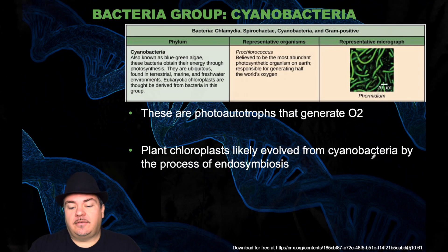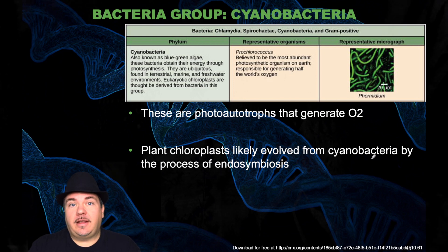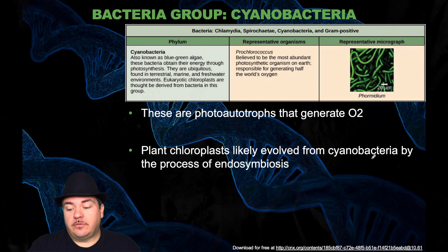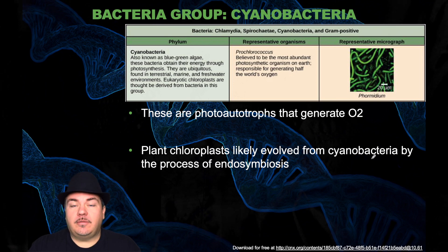Next phylum is the cyanobacteria. These are photoautotrophs that generate oxygen — they take in light energy to produce sugar molecules like glucose, and they also generate oxygen as a byproduct. Another thing to note is that the chloroplasts in plants likely evolved from cyanobacteria by endosymbiosis.